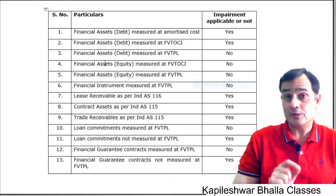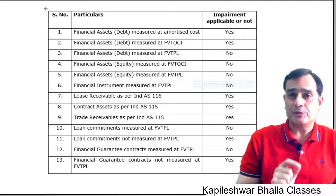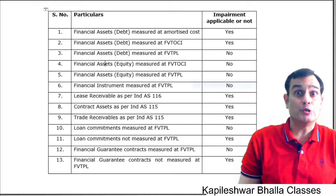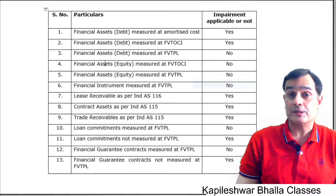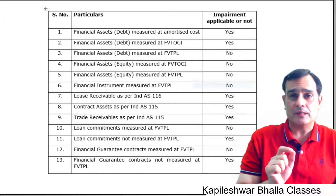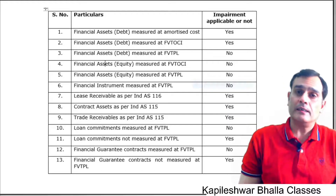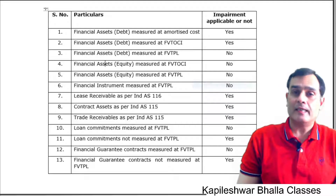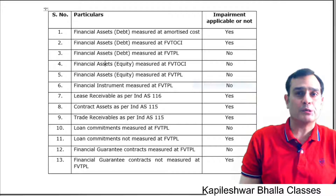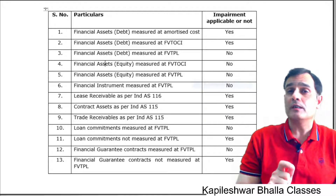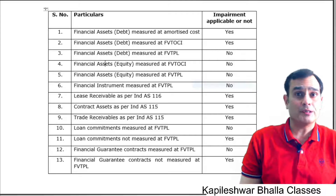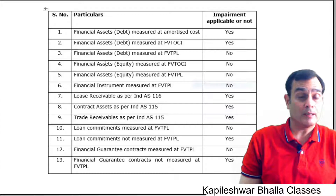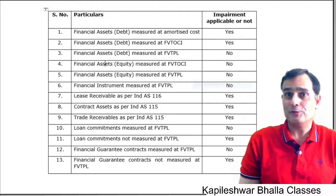When considering investments in subsidiaries, associates, and joint ventures: if those investments are measured at cost, impairment testing is done — but that is covered under Ind AS 36. If those equity investments are measured at fair value — generally fair value through OCI — that again involves no recycling, so impairment testing under the ECL model would not apply.